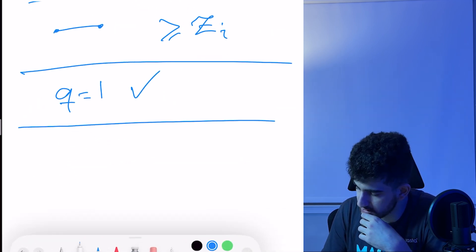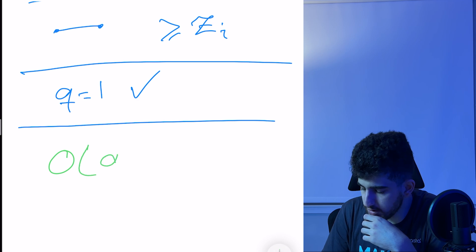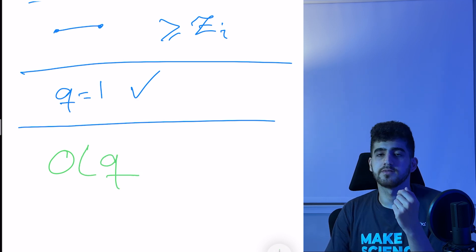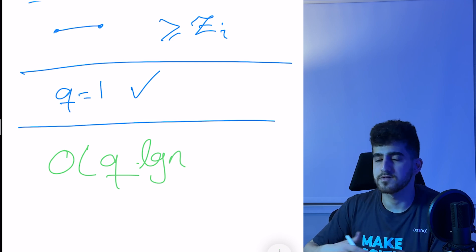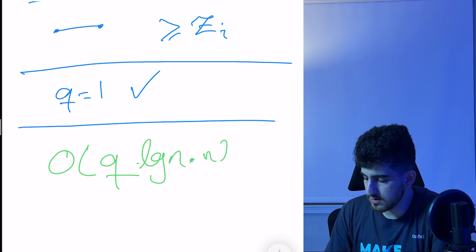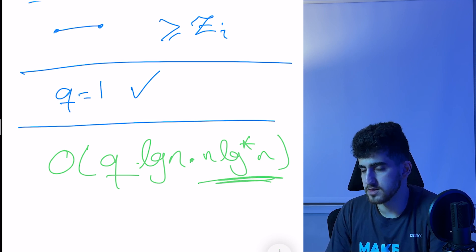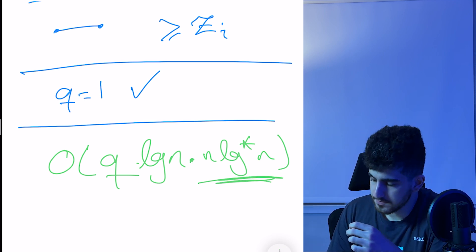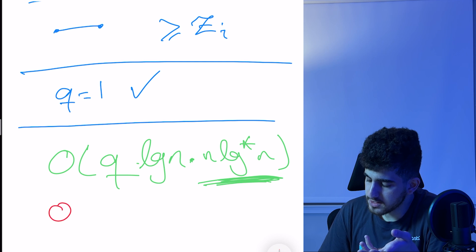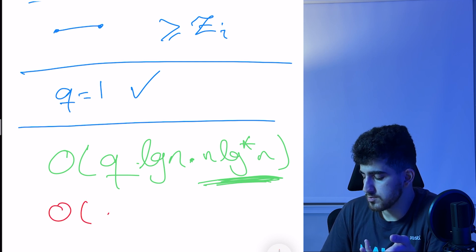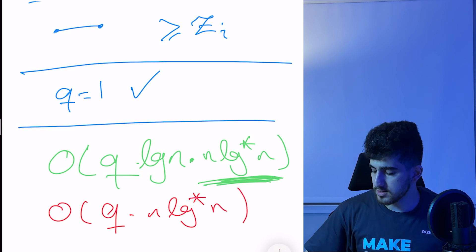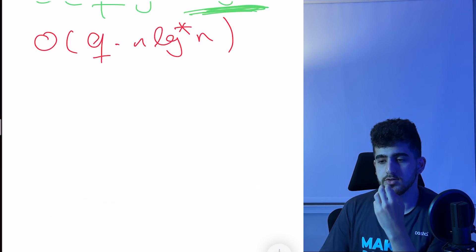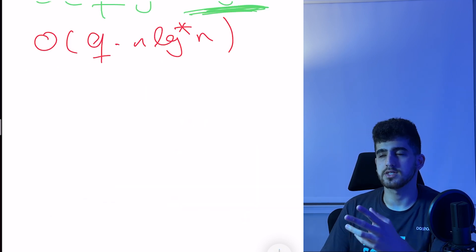In the general case, the time complexity per query for the binary search approach is O(N log* N · log N), since each DSU operation is O(N log* N) and binary search is O(log N). Without binary search, the complexity is O(Q · N log* N). Both are too slow and we need to optimize.